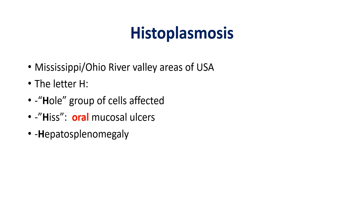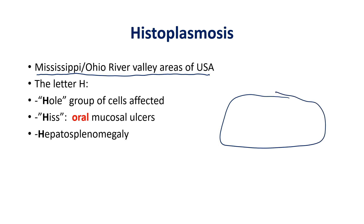Histoplasmosis is common in the Mississippi and Ohio River Valley area of the USA — think Illinois, Indiana, southern Michigan, that north-central region. On a map, this is roughly this central area extending across those states. They'll often tell you the patient was near the Mississippi River or Ohio River Valley, or give you a state like Illinois or Indiana.